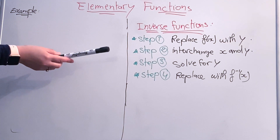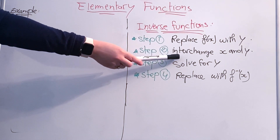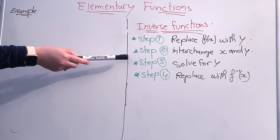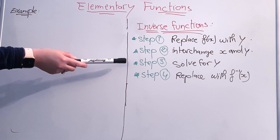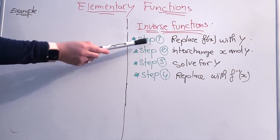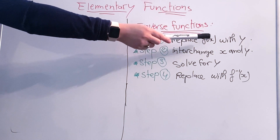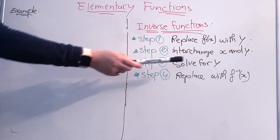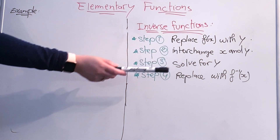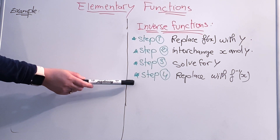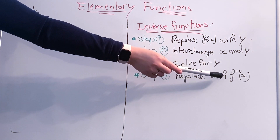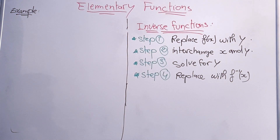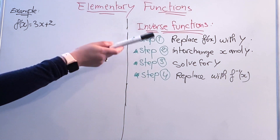The inverse function is found by interchanging x and y and then solving for y. Here are the steps: first, replace f(x) with y; second, interchange x and y; third, solve for y; and finally, replace y with the inverse function notation f inverse of x.